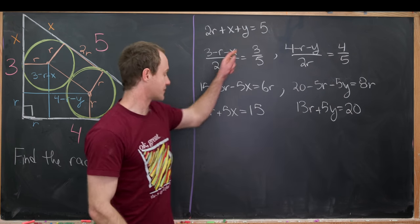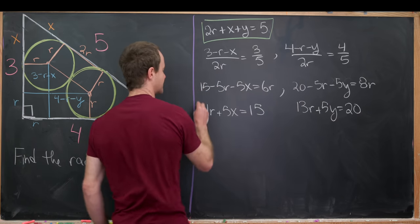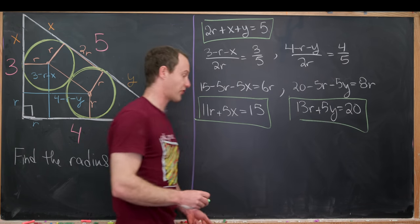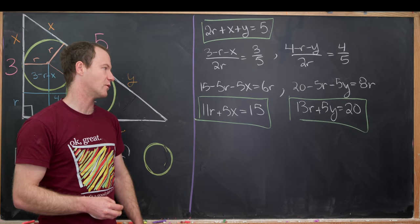But now we've got a system of three equations. So this is an equation right here. This is an equation right here. This is an equation right here. And then three unknowns, r, x, and y. Although all we really want is r.